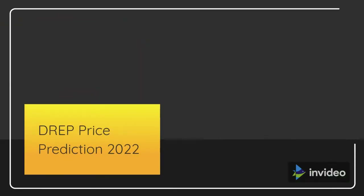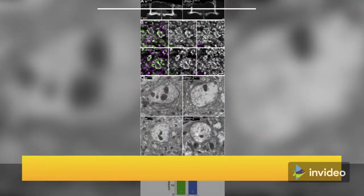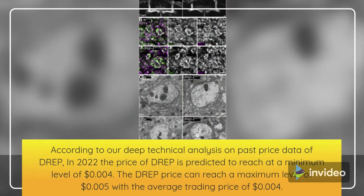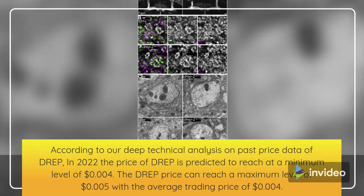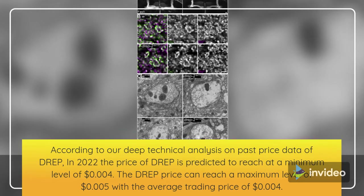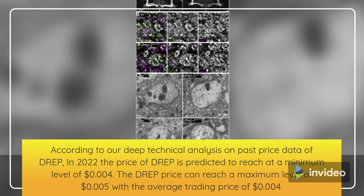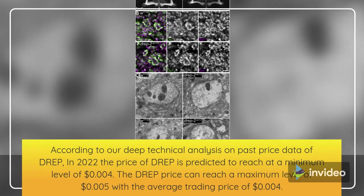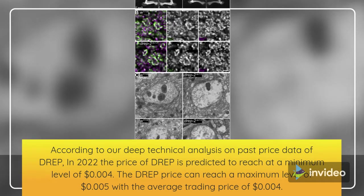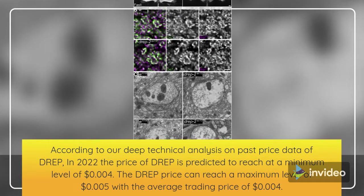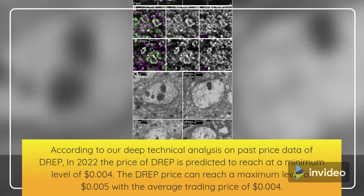DREP Price Prediction 2022. According to our deep technical analysis on past price data of DREP, in 2022 the price of DREP is predicted to reach a minimum level of $0.004. The DREP price can reach a maximum level of $0.005 with the average trading price of $0.004.